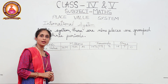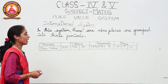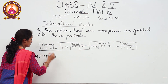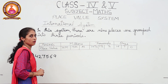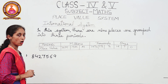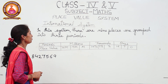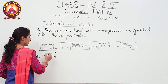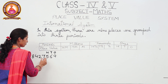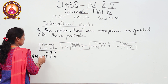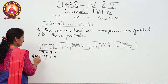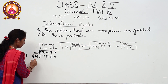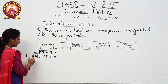Let us learn to write a number in the international place value system with the help of an example. In this number, we first put the commas using the periods. The ones period has three places — ones, tens, and hundreds — so we put the first comma after the hundreds place. Next, seven is at the thousands place, two is at the ten thousands place, and four is at the hundred thousands place, so we put the next comma after four, between eight and four.